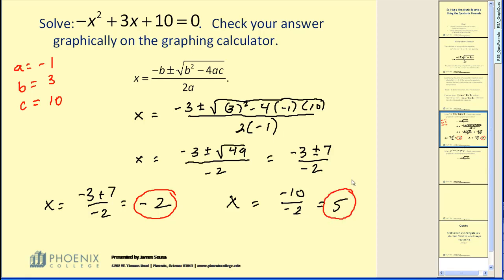Now graphically, if we let f of x equal this quadratic, negative two and positive five should be our x intercepts. Let's verify that.